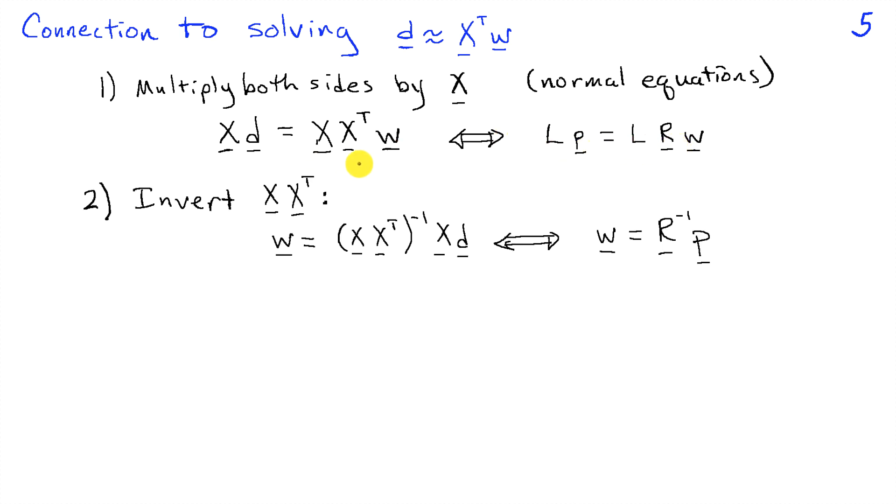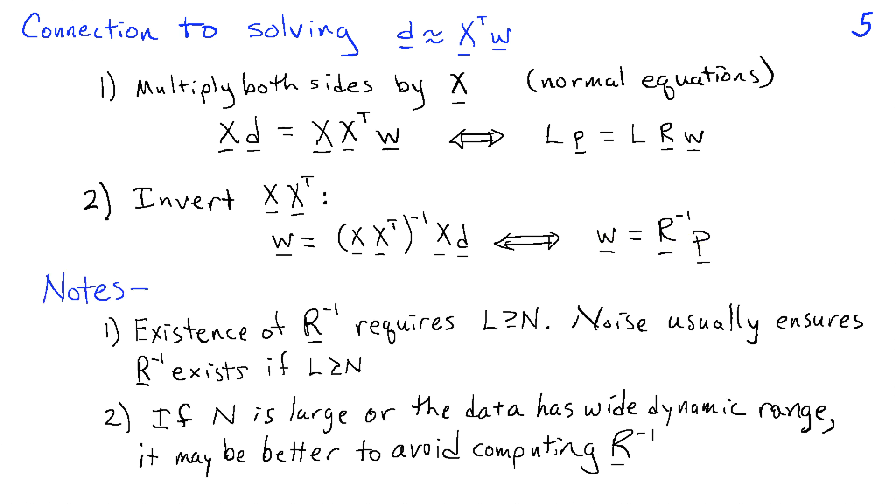Assuming X X transpose was invertible, you would invert that and get, finally, that W is equal to X X transpose inverse times X D. And this is totally equivalent to W equals R inverse P. And finally, I have a couple notes that I want to mention.